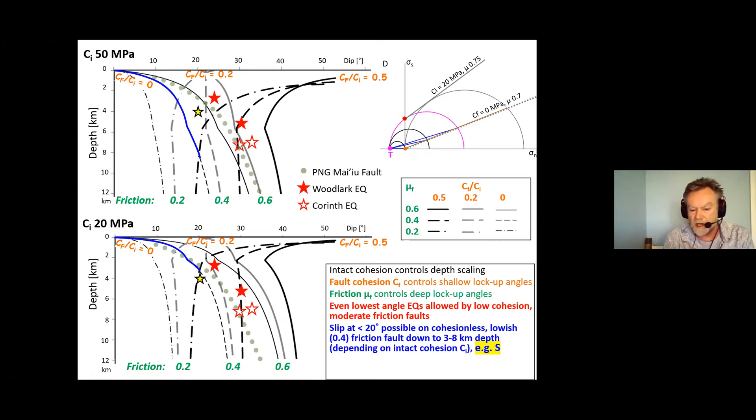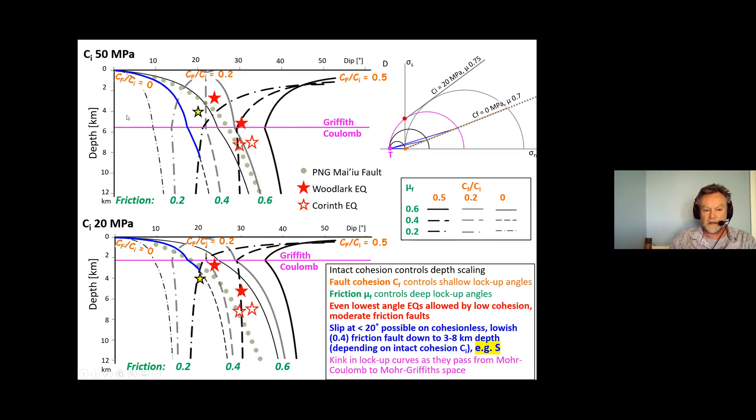So the implication is slip at less than 20 degrees is possible on cohesionless lowish friction faults down to three to eight kilometers. 0.4 I put that in there because that's the friction coefficient of serpentinites and this is where S plots on these figures depending on for low cohesion moderate friction or lowish friction faults. And finally the kink in these lock-up curves, the angle, the lock-up angle versus depth, so you see this pronounced kink, that's where we transition from Coulomb behavior to Griffiths behavior going upwards. So this is based on Choi and Buck and this is the new result based on Mohr-Griffiths behavior.